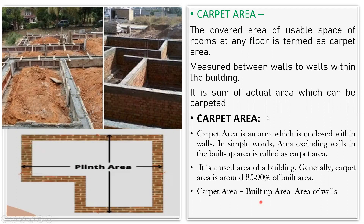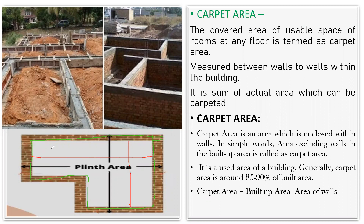The formula is: carpet area equals the built-up area minus the wall thickness. In the plinth area, if I deduct all the walls, whatever is left — the area from here to here, and from here to here — that is the place where I can lay my carpet, so that is my carpet area.